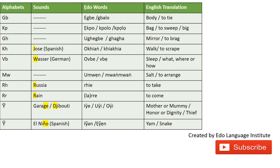We have a word for salt, and 'MAMA' means to arrange — to arrange things. Now for the R sounds: the first is the sharper R as in 'Russia' — the EDO word example for this is 'RERE' which means to take. The other R sound is softer, like the R in 'rain': 'LARE LARE' means calm — as in calling someone to come here.